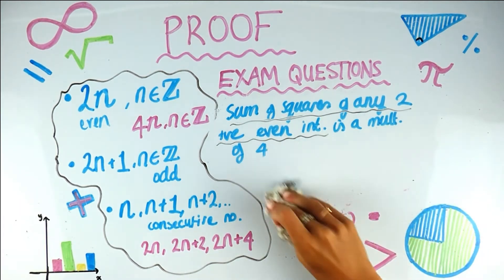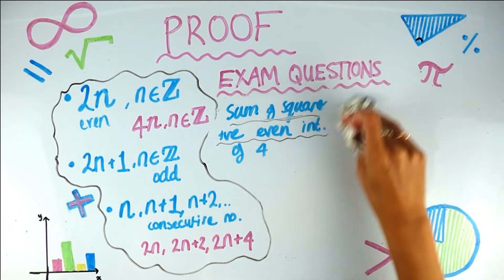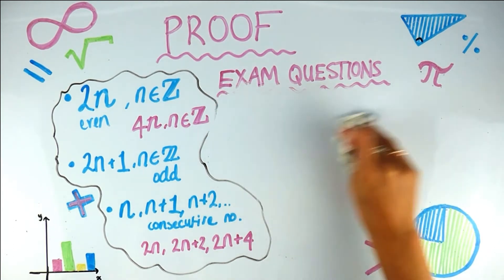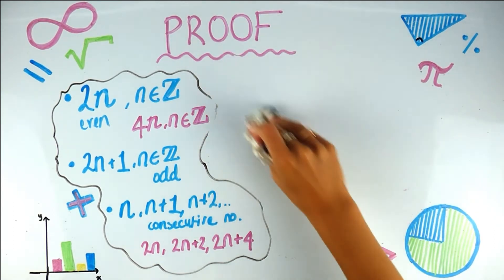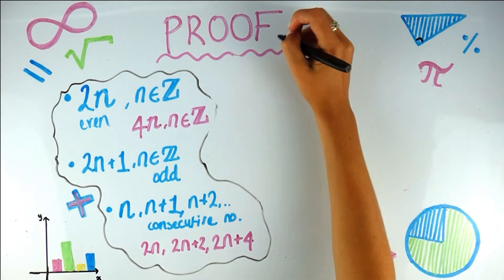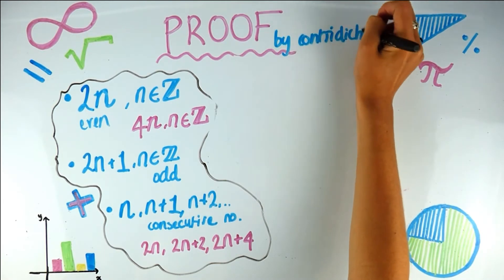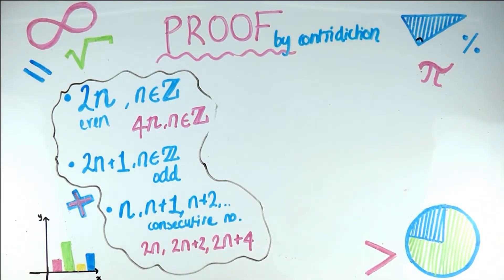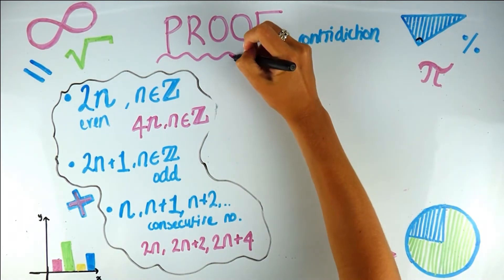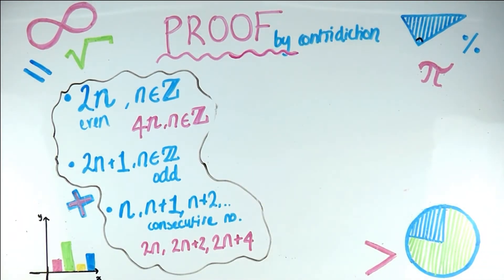There is another form of proof called proof by contradiction. This is like someone making a statement and you wanting to show they're wrong — you give an example where it doesn't work. We're going to do that with maths, which is much more fun.